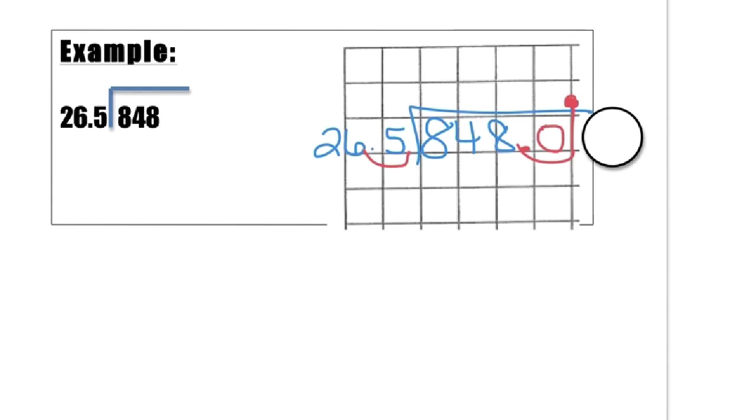Okay, so this is a big number. It's a three-digit number. So we would want you to use a calculator to see how many times this will go into the number. 265 will obviously not go into 8, so we will put a zero here. It also will not go into 84. But it will go into 848. So 848 divided by 265 is 3.